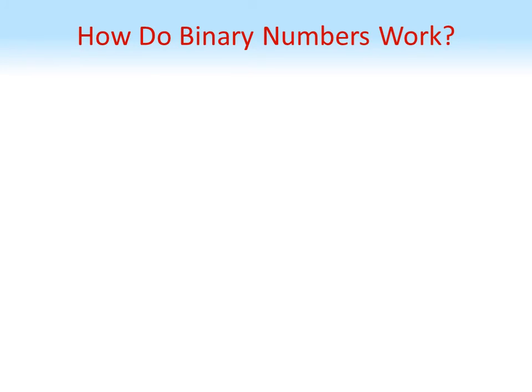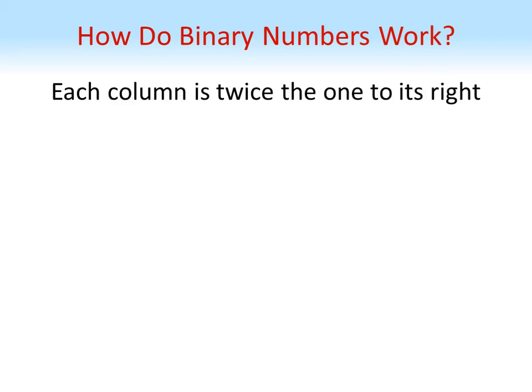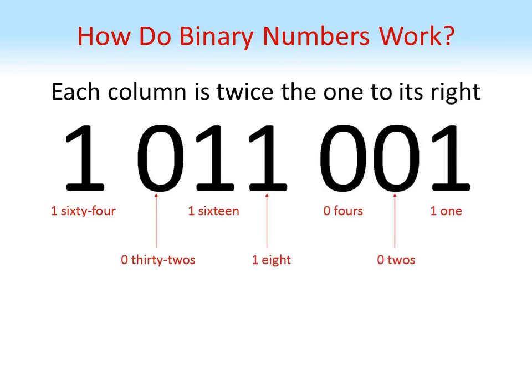While in decimal each column is worth 10 times the column to the right, in binary — because there are only two digits — each column is twice the size. This means the first column on the right counts ones, the second counts twos, then fours, eights, and so on in powers of two. To convert to decimal, we just add up the appropriate powers of two. For our number here, we have ones in the 64 column, the 16 column, the 8 column, and the 1 column — adding these together gives us 89 in decimal.